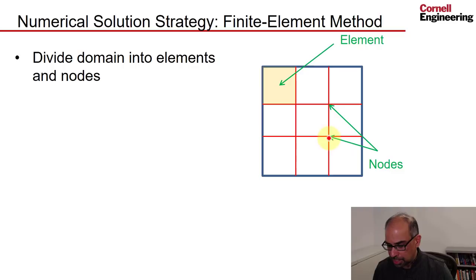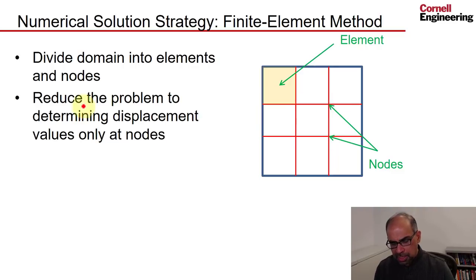We have nine elements and then the corners we can think of as nodes. And we say we'll reduce the problem to determining displacement values only at the nodes. Here I have 1, 2, 3, 4 times 4, 16 nodes. That means I'm reducing the problem to finding 16 U values and 16 V values.